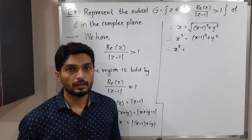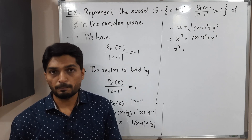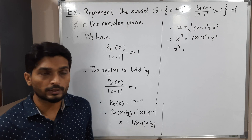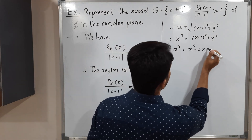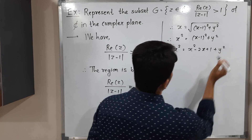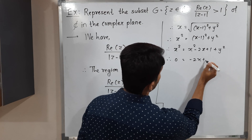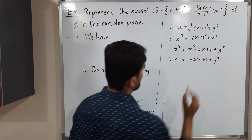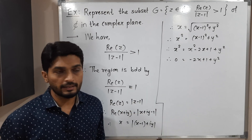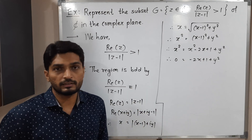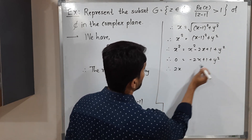Expanding (x minus one) squared using the formula (a minus b) squared equals a squared minus 2ab plus b squared, we get x squared equals x squared minus 2x plus 1 plus y squared. The x squared terms cancel, leaving us with 2x minus 1 equals y squared, after rearranging.